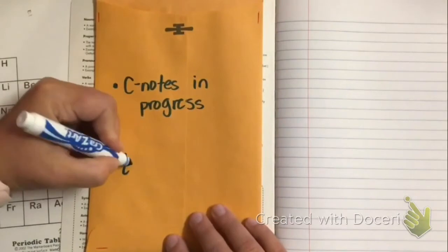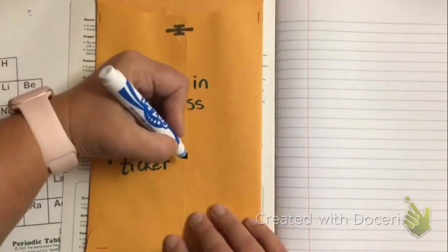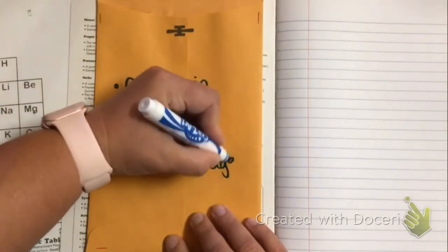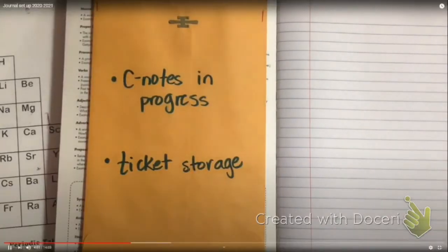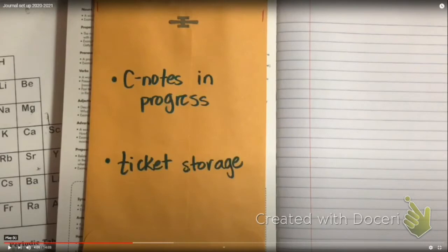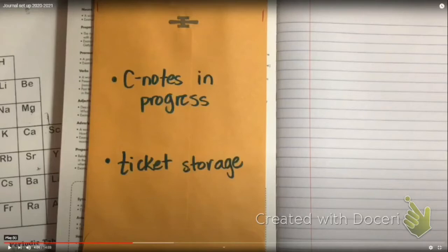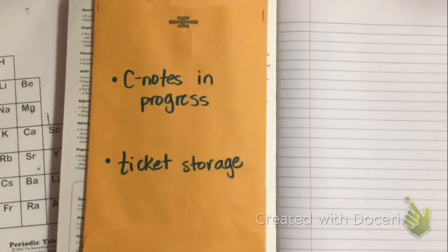Also write 'ticket storage' — we have a classroom ticket system for incentives, and some people choose to hoard their tickets all year and wait to put them in the drawing until the last six weeks. One more thing to write on this folder: 'boykins.' This folder on the outside is where you'll stick any happy boykins or angry boykins you get during the year. During the Triwizard Tournament we can redeem those for house points. So it'll say 'C notes in progress,' 'ticket storage,' and 'boykins.'